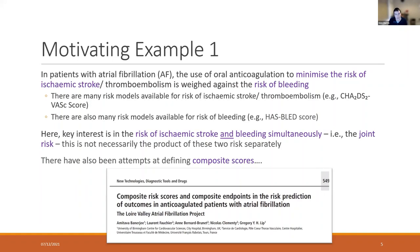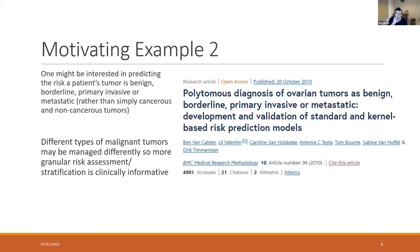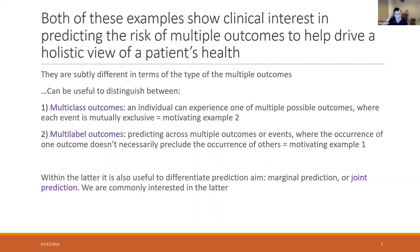It's important to note statistically that the joint risk is not necessarily just the result of multiplying the outputs from those two models together, and I'll come back to that idea. The second example is where we're interested in an outcome we want to split with more granularity. In the context of cancer, what we might be interested in predicting is whether a patient's tumour is benign, borderline, primary invasive, or metastatic — rather than simply whether that tumour is cancerous or not. I would class this still as a multiple outcome because you have those multiple levels rather than just a binary.